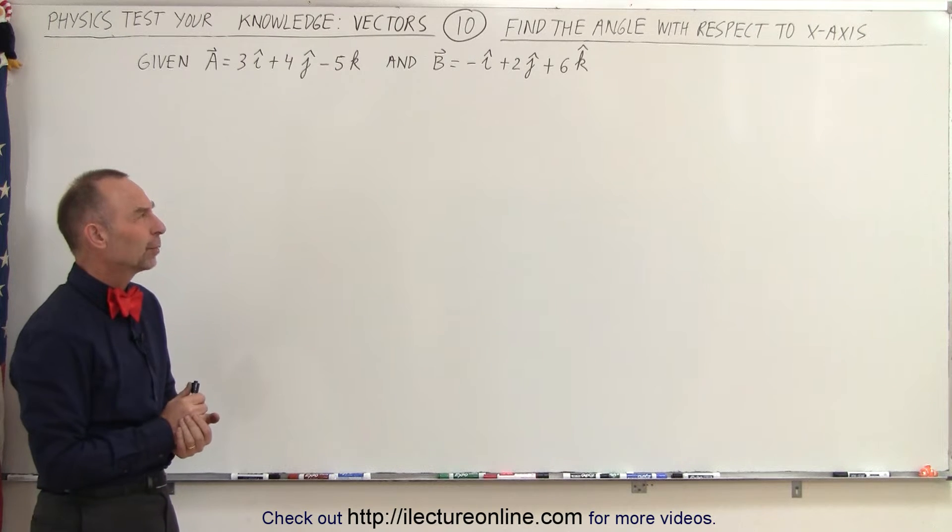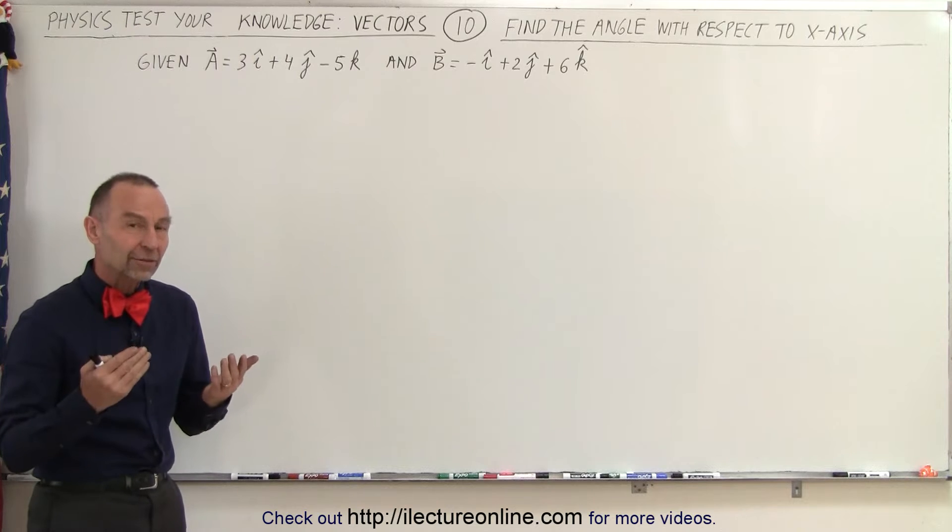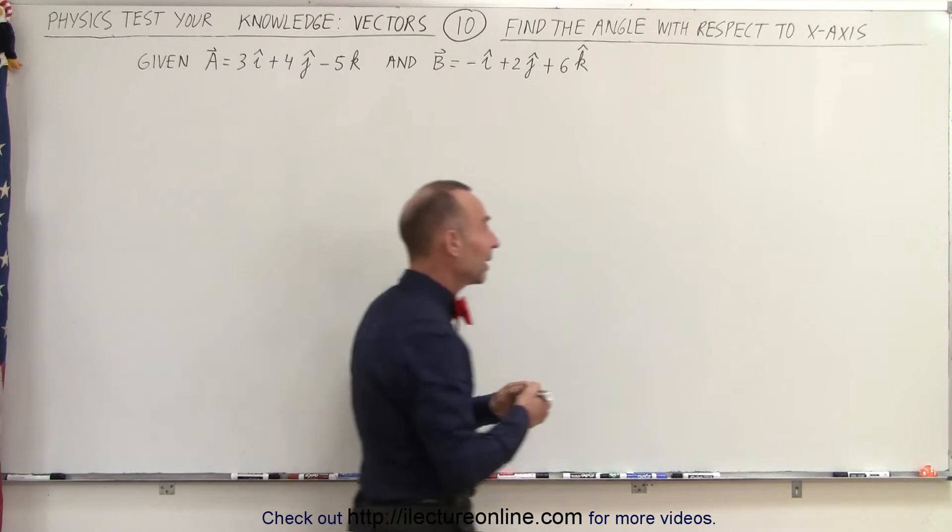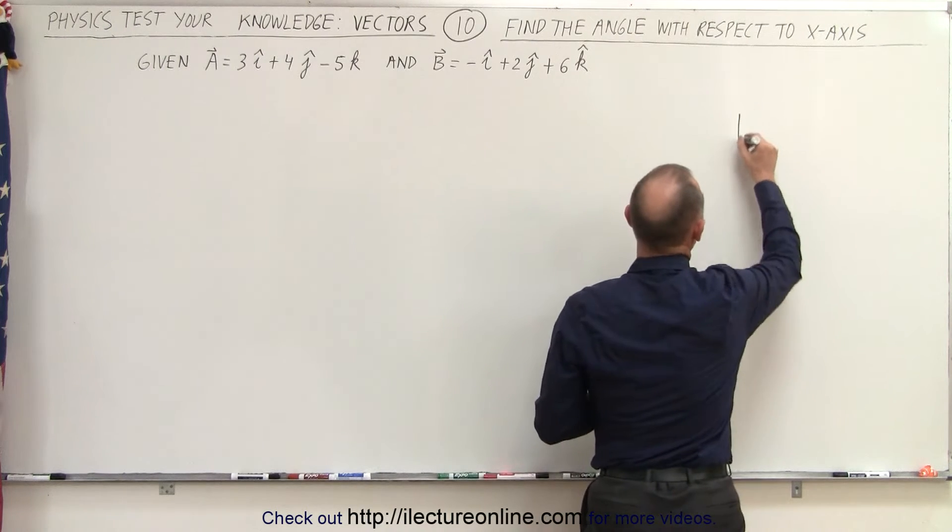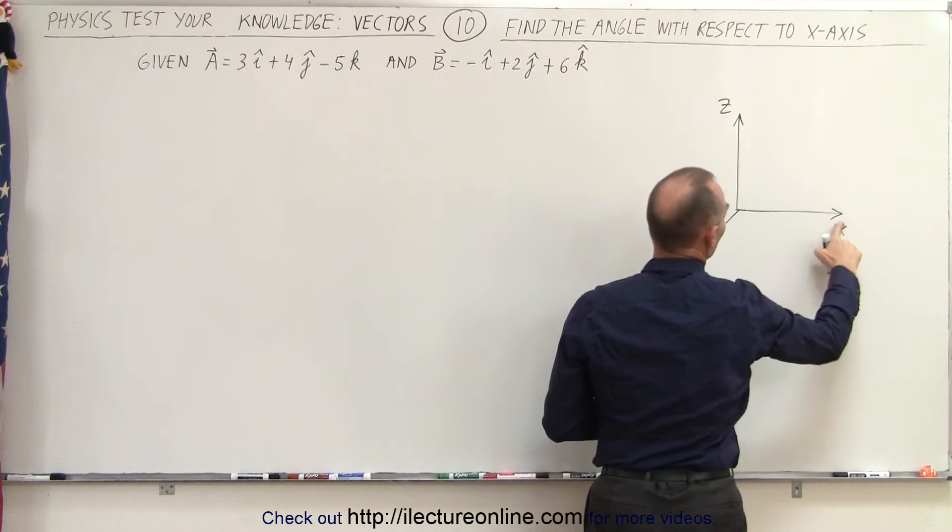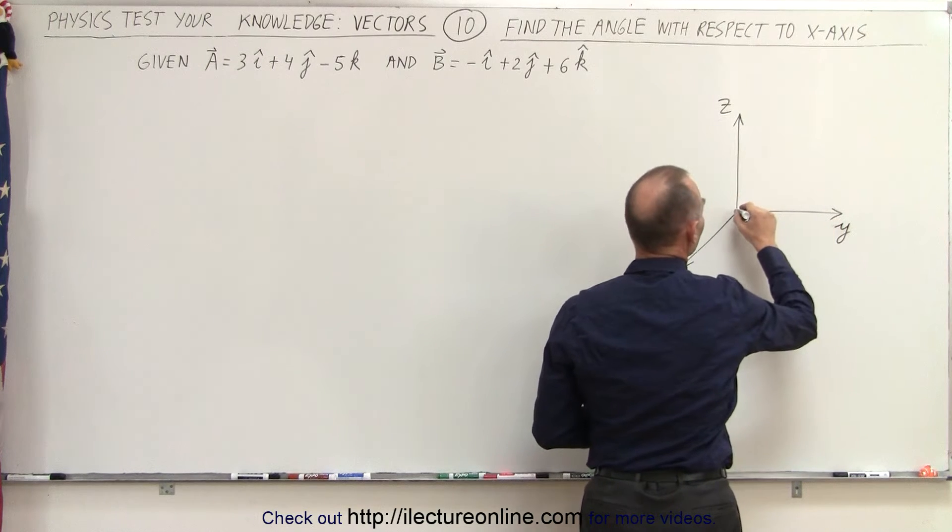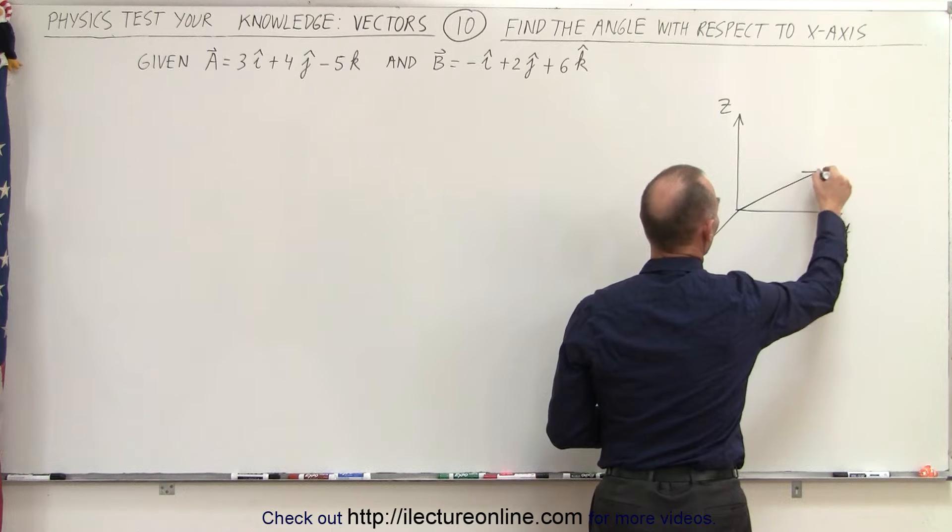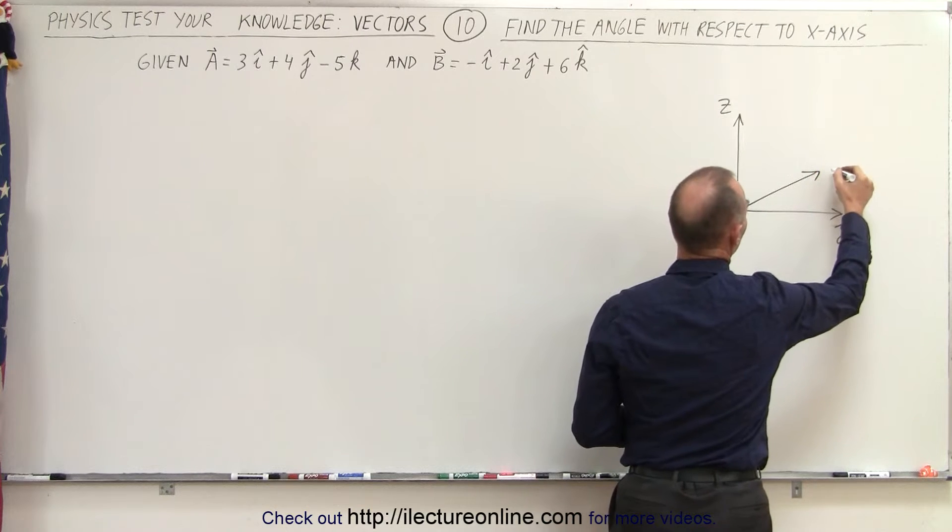So how do we do that? Well, direction cosines comes to mind. For example, if we have something in three dimensions and let's say we have some vector in some arbitrary direction,